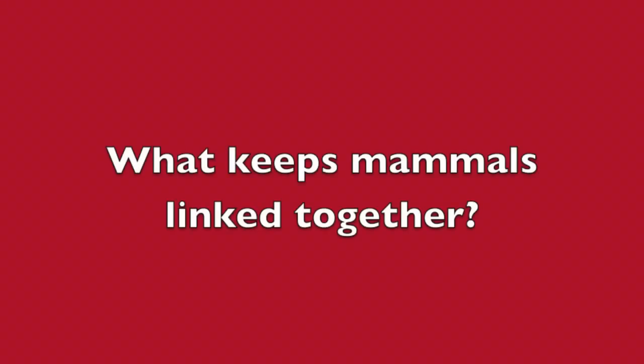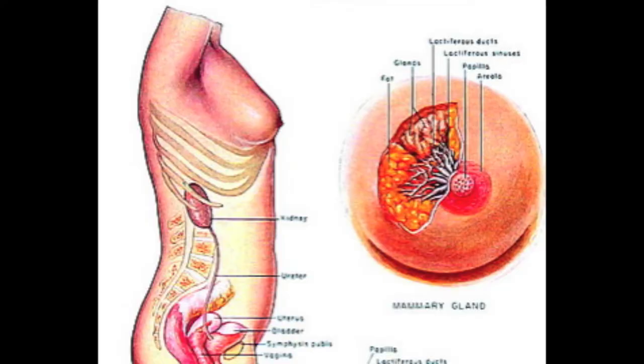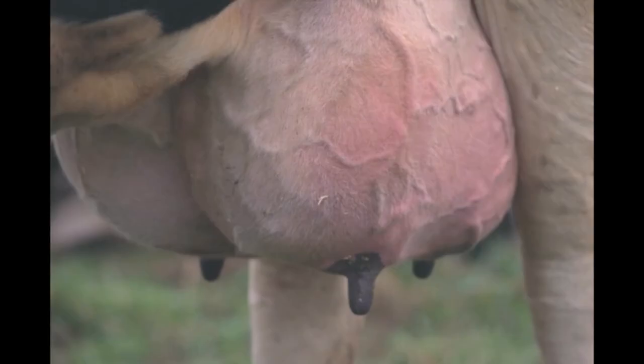What keeps mammals linked together? There are two things. All mammals have hair at some time during their development, and all female mammals possess mammary glands with external openings for nourishing their young.